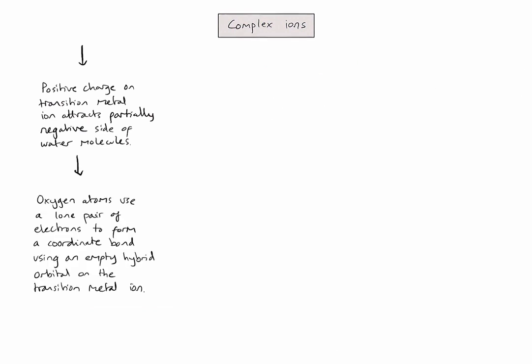So to try and represent this process, let's draw an orbital box diagram for the copper 2-plus ion, which has its outer electrons in the 3-D sublevel. Because those orbitals are occupied, the oxygen atoms can't use them to form a coordinate bond. So you'll notice in the diagram on the right, I've drawn some empty higher energy orbitals. Technically, these are hybrid orbitals from the 4s, 4p, and 4d sublevels. And because they're empty, an oxygen atom can donate a lone pair of electrons to form a coordinate bond.